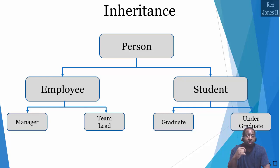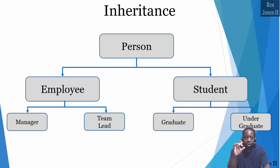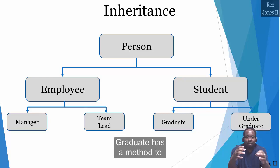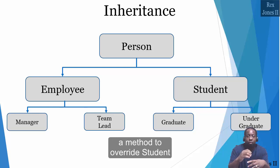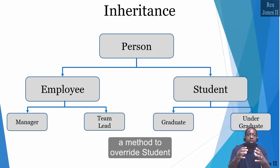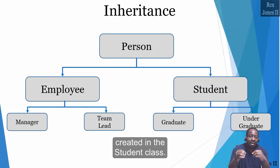I'm going to implement one version for Graduate and another for Undergraduate. The Graduate class has a method to override the Student method, while Undergraduate does not have an override method for Student, so it will use the method defined in the Student class.